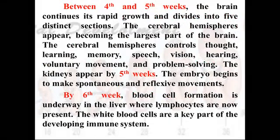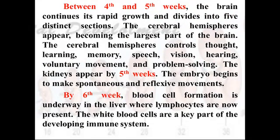Between the fourth and fifth weeks, the brain continues its rapid growth and divides into five distinct sections. The cerebral hemisphere appears, becoming the largest part of the brain. The cerebral hemisphere controls higher thinking processes including thought, learning, memory, speech, vision, hearing, voluntary movements, and problem solving. The kidneys appear by the fifth week. The embryo also begins to make spontaneous and reflexive movements — for example, automatically closing its eyes in response to sudden stimuli.